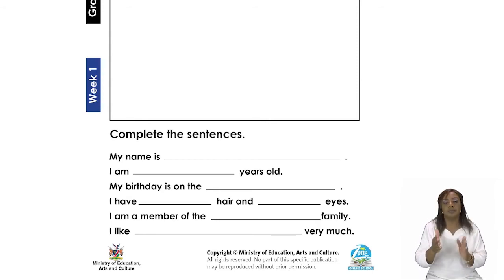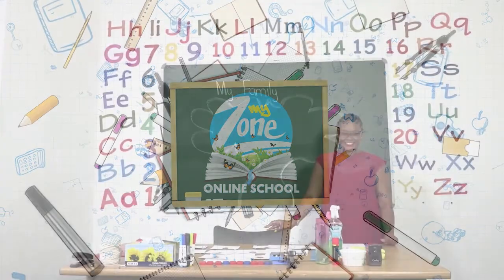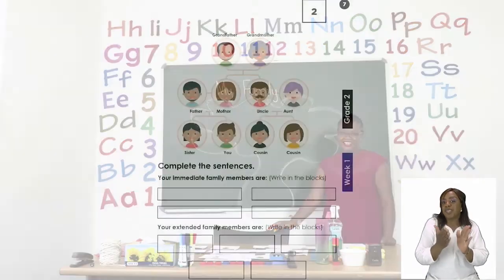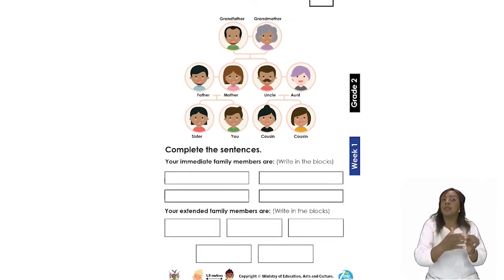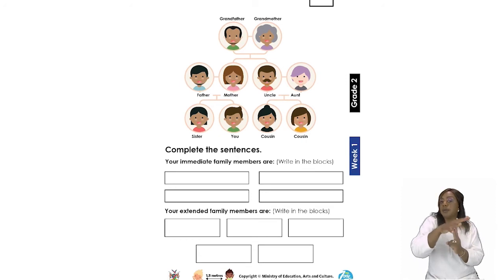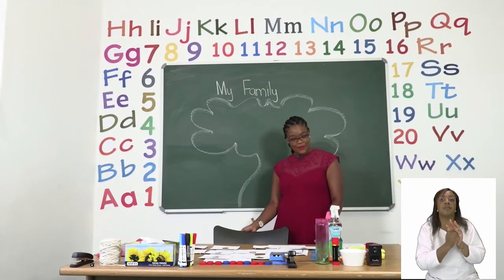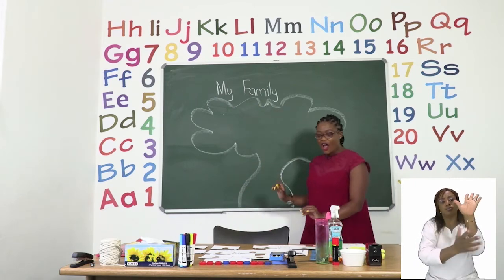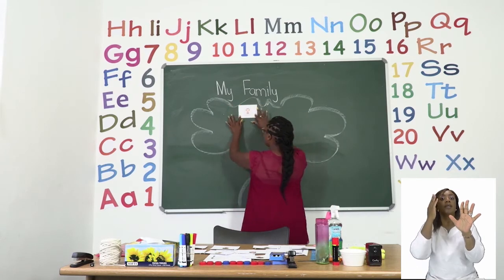Let's turn to page seven. On page seven you can see that we have family members — two types: immediate family members and extended family members. I am going to help you by building a tree on the board and you are going to build it with me. The first people at the very top of our tree are going to be grandfather and grandmother.